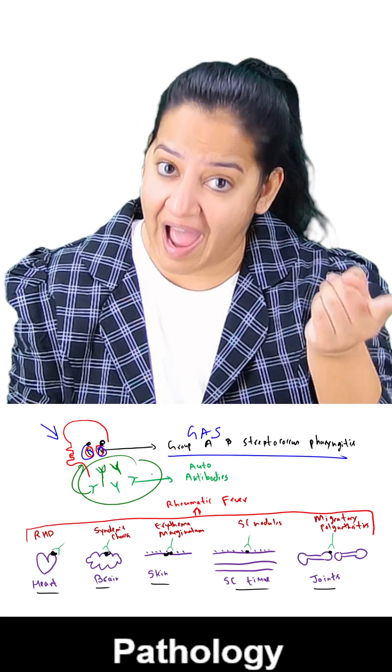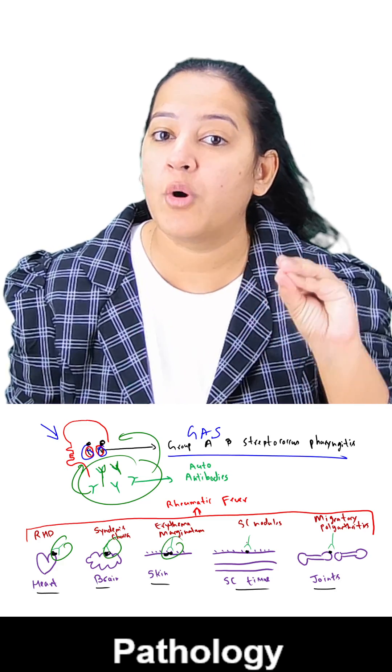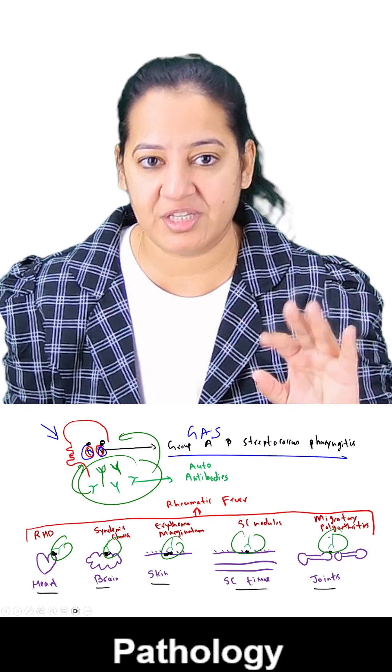So basically these antibodies which are actually formed for the bacteria, they will cross react with these five organs, causing five diseases in five organs, damaging the five organs.